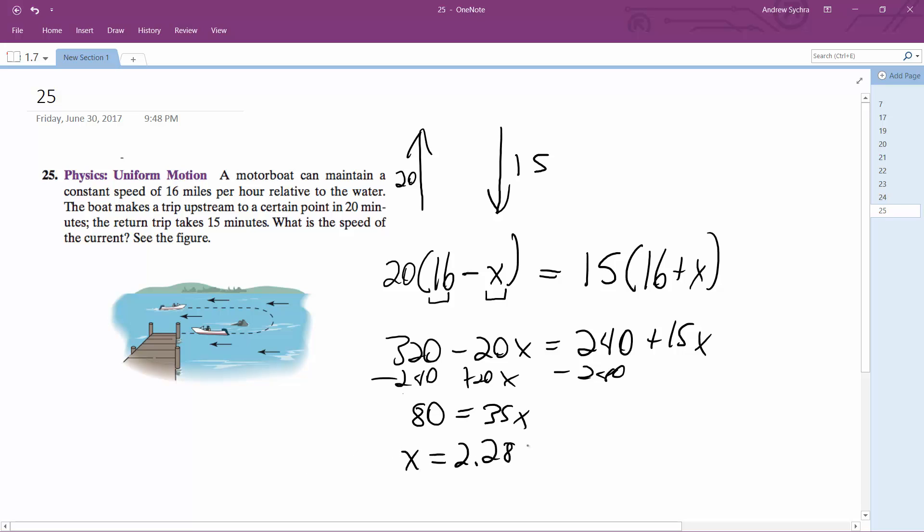Or pretty much, the speed of the water going downstream is about 2.29 miles an hour. That's what I got. That's the solution.